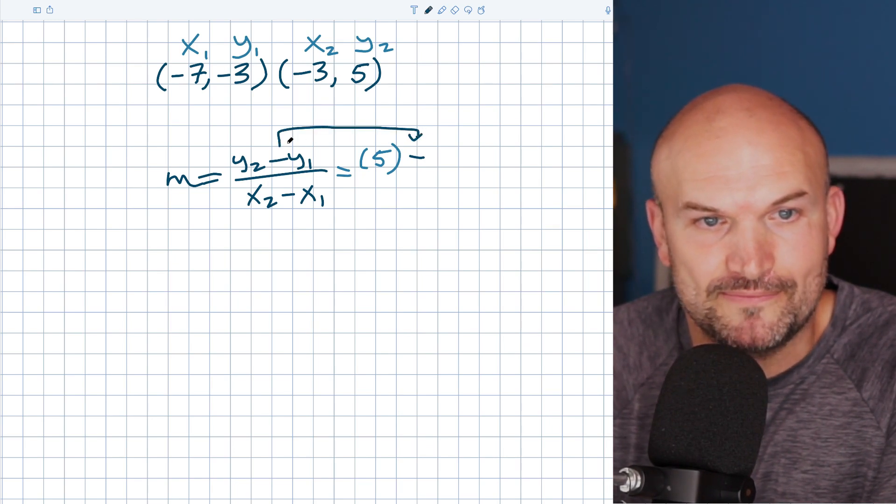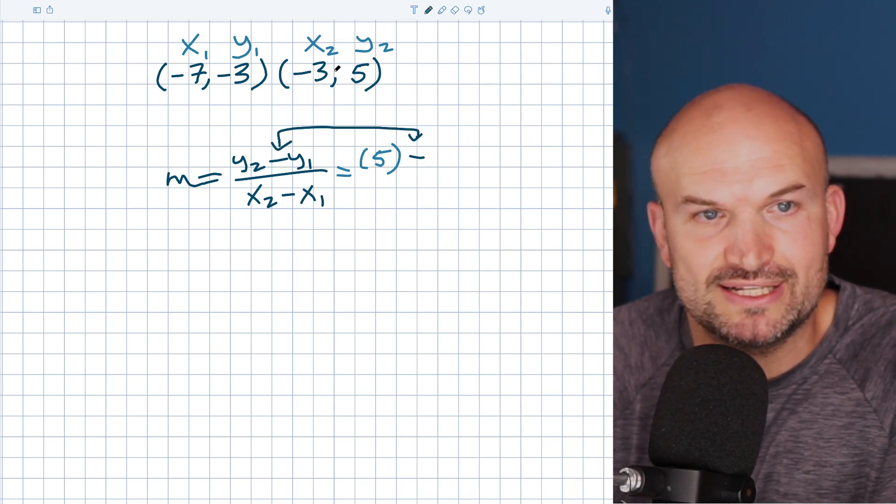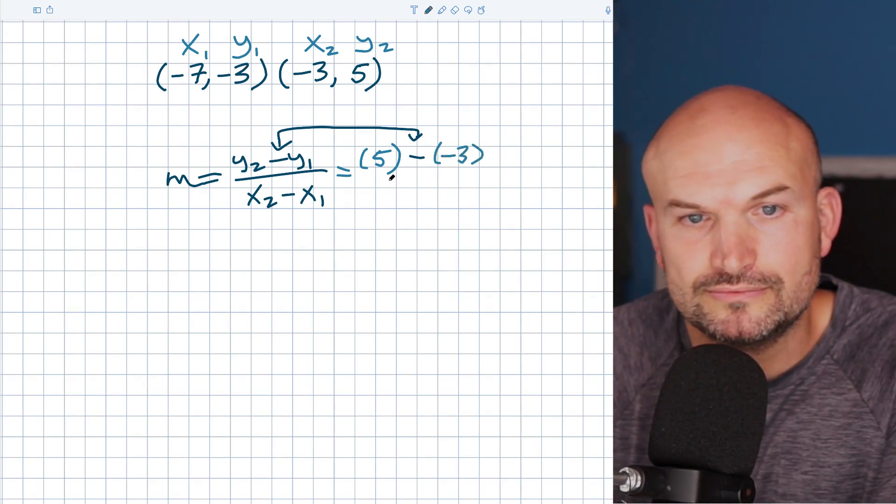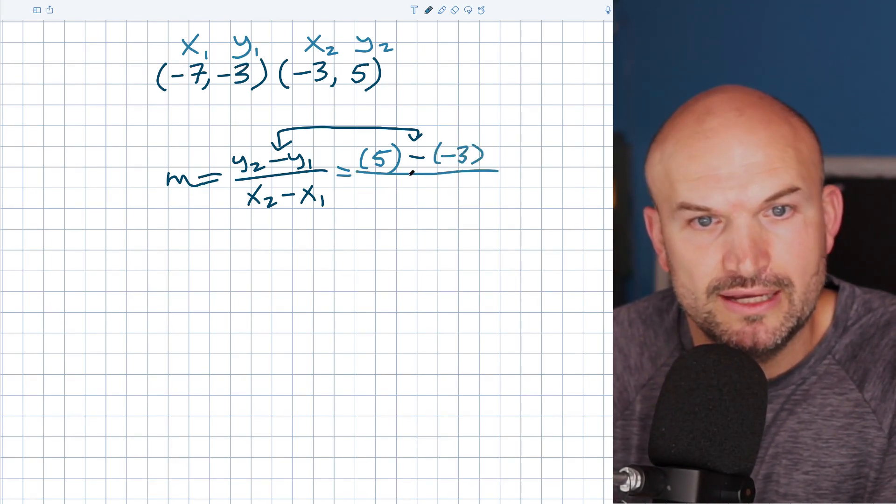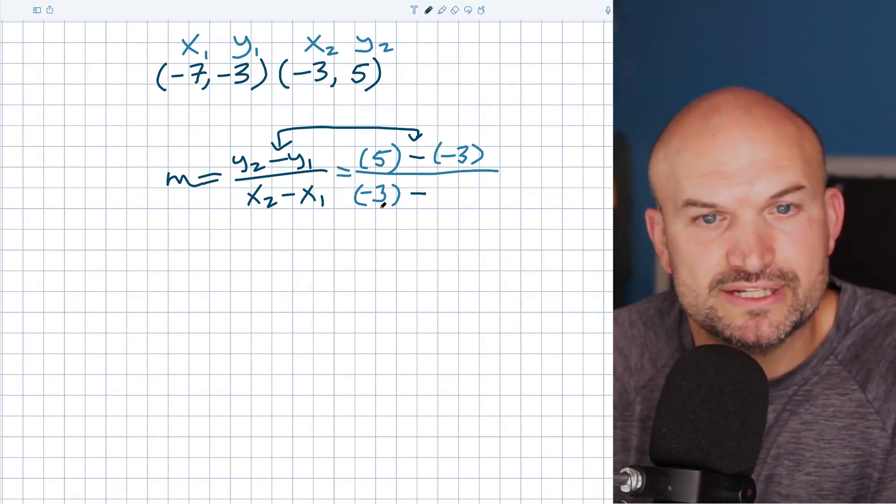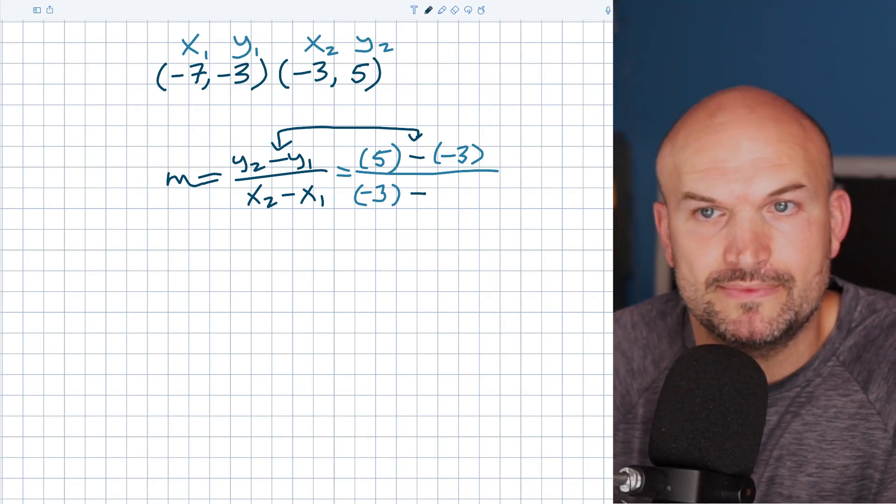I'm keeping the same one there. And then I'm going to subtract this from the other, my Y1, which is negative three. Okay, then I'm going to do it all over again. Now in this case, I'm going to take negative three, which is my X2. And then I'm going to subtract it. And again, I'm just using this negative here. I'm going to subtract it from negative seven.